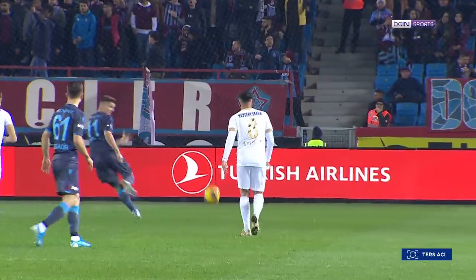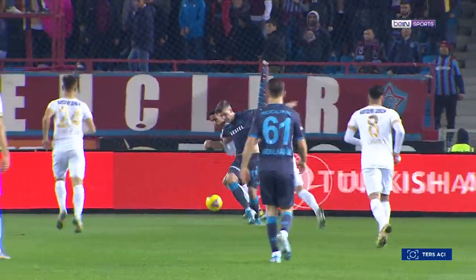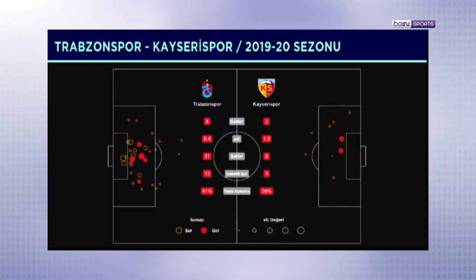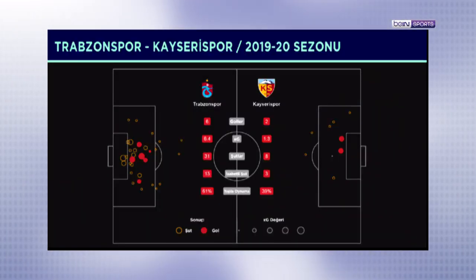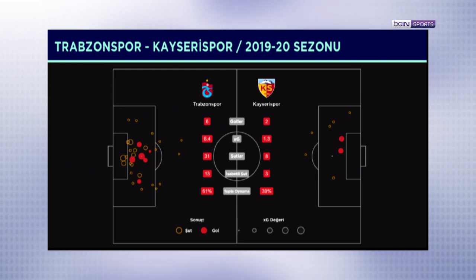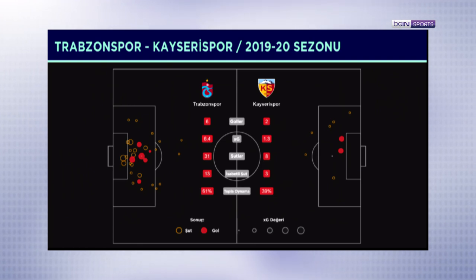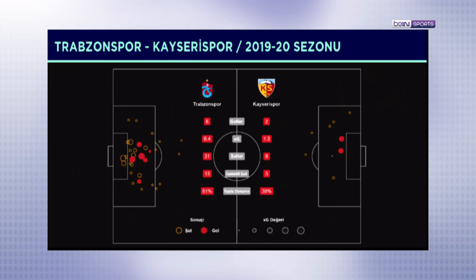Opta döneminde bir takımın en yüksek gol beklentisine ulaştığı maç 2019-2020 sezonu Trabzonspor'un 6.4 xG'den 6 gol bulduğu Kayseri Spor maçı. Bu maç aynı zamanda toplamda 7.67'lik gol beklentisiyle Opta'nın Süper Lig verisi toplamaya başladığı 2014-15 sezonu başından beri en yüksek xG toplanan maç.